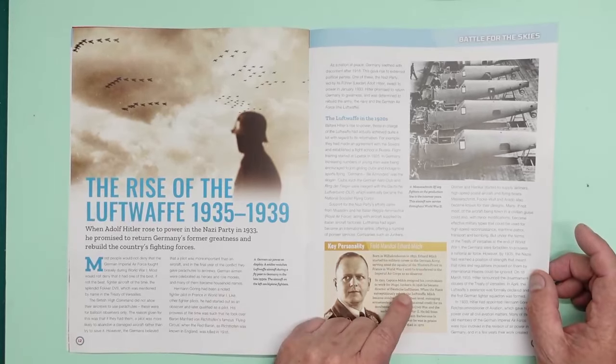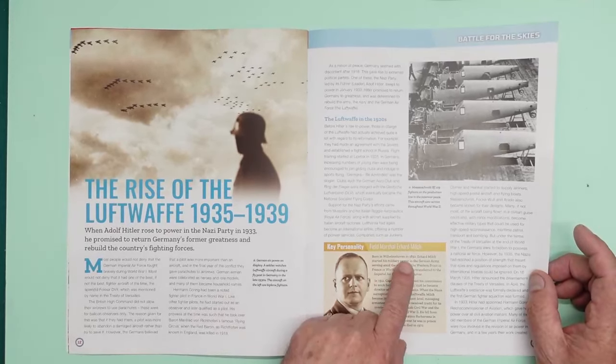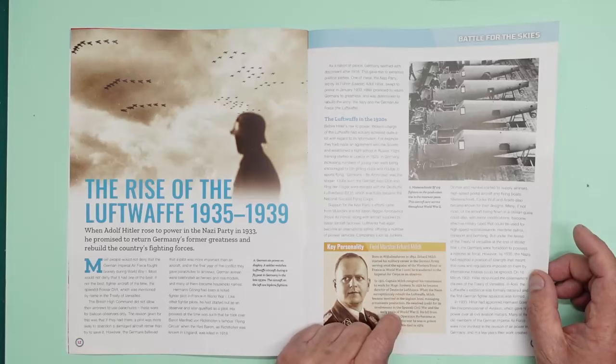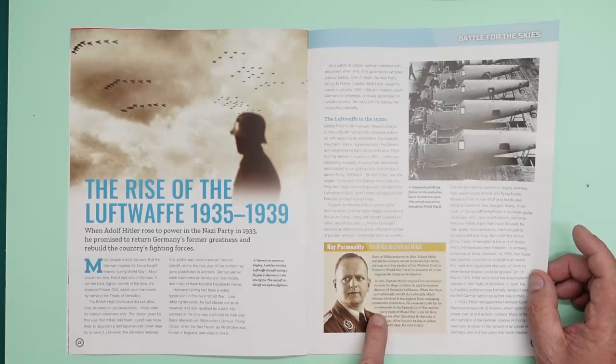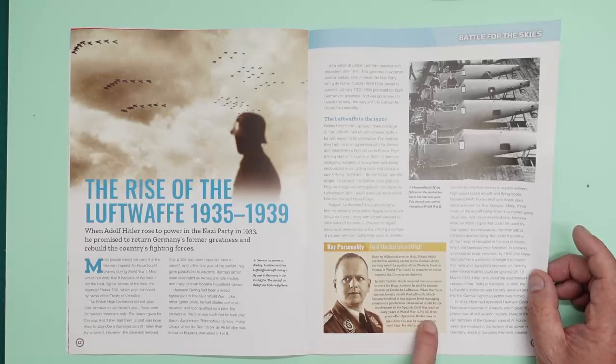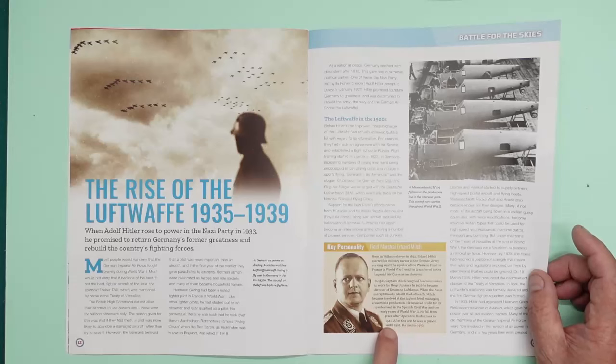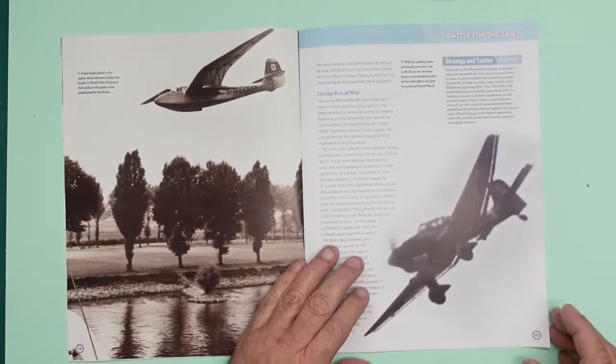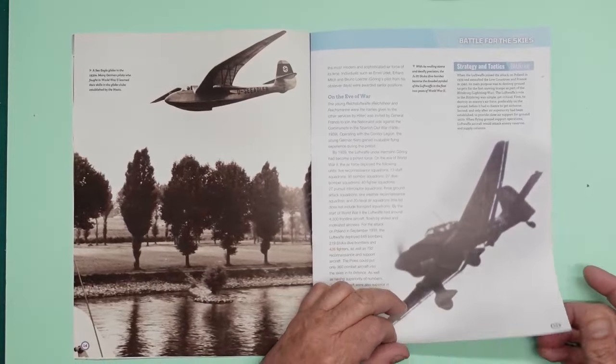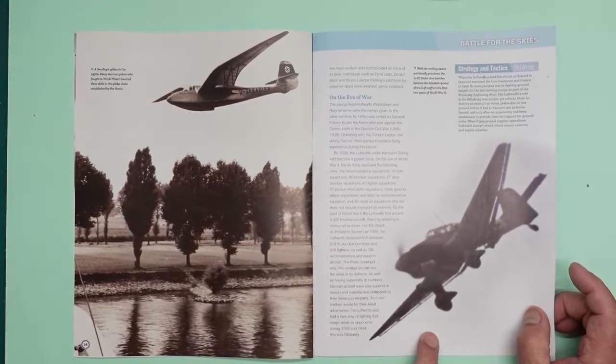Field Marshal Erhard Milch, born in Wilhelmshaven in 1892, he resigned his commission to work for Hugo Juncker in 1926. He became director of Deutsche Lufthansa. He received credit for the involvement of the Spanish Civil War and the early years of World War II. He fell from Graceland after Operation Barbarossa in 1941. After the war, he was imprisoned until 1954. He died in 1972. There we go. You can see one of their beautiful gliders there.